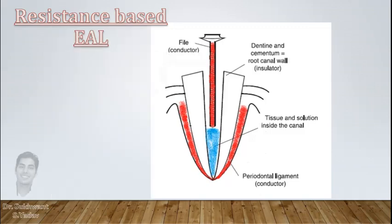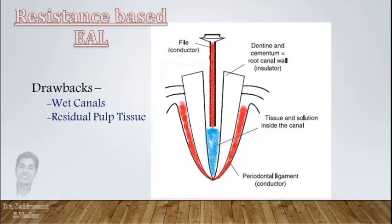But as there can be some tissue or blood or irrigant present in the canal, it leads to completion of circuit before reaching apex and this causes error in reading. So drawback of resistance based apex locator was that they can work in dry canals only.